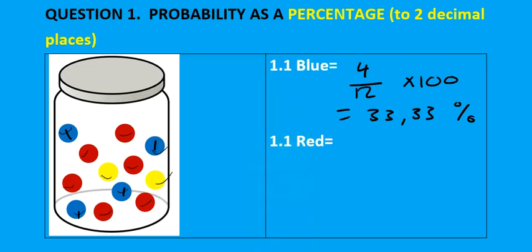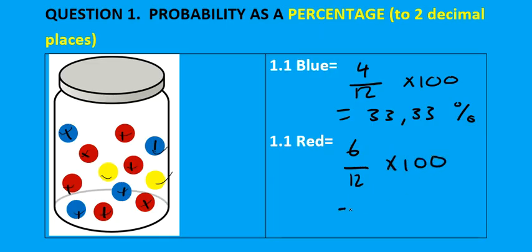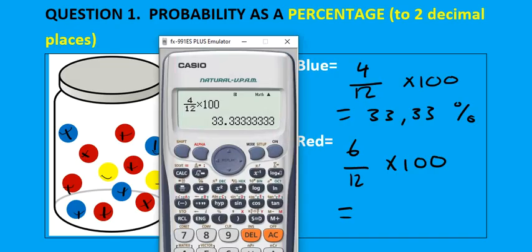What is the probability of getting red? We still have a total of 12, so the 12 comes at the bottom. How many are red? We count — one, two, three, four, five, six — six red marbles. We multiply by 100 on the calculator: 6 divided by 12 multiplied by 100 gives you 50 percent.